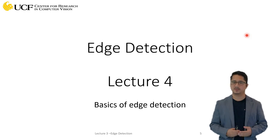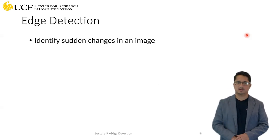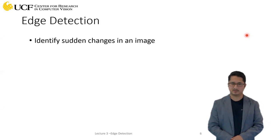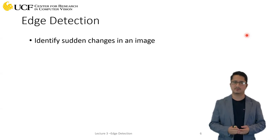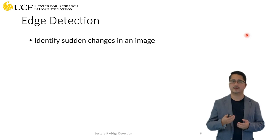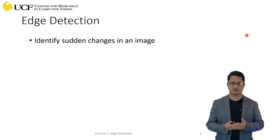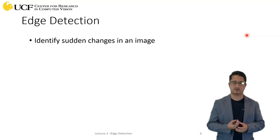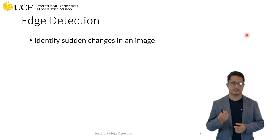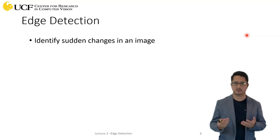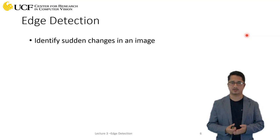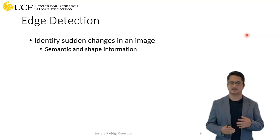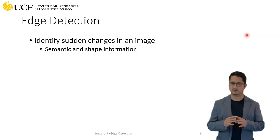Let's start with the basics of edge detection. We talked about image derivatives and saw that they give us a sense of how pixel values are changing in an image. That's the core idea of detecting edges — if pixel values are changing, we consider that an edge; if the value is smooth and not changing, there is no edge.